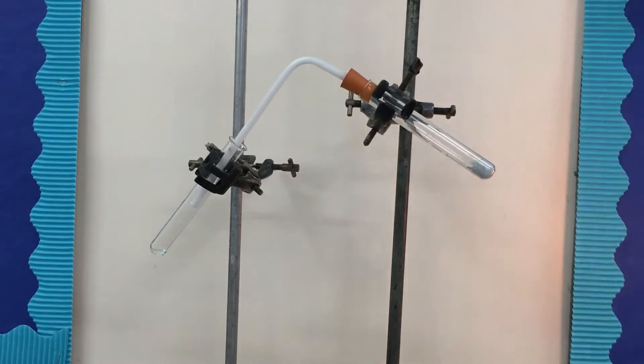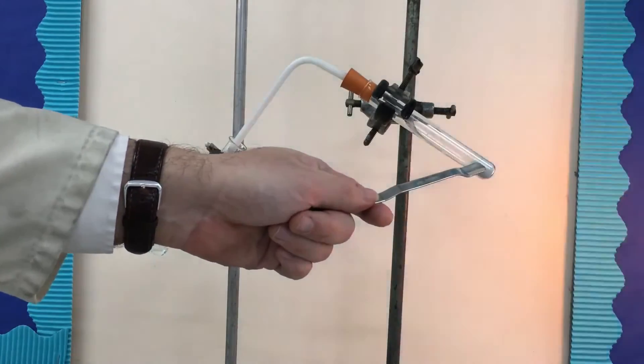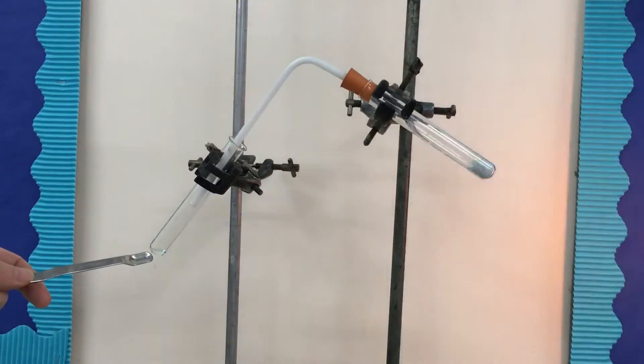So as we can see, we've heated the originally blue copper sulfate, the hydrated copper sulfate, CuSO4·5H2O, and it's become the white anhydrous copper sulfate and water, which we've collected in that tube there.